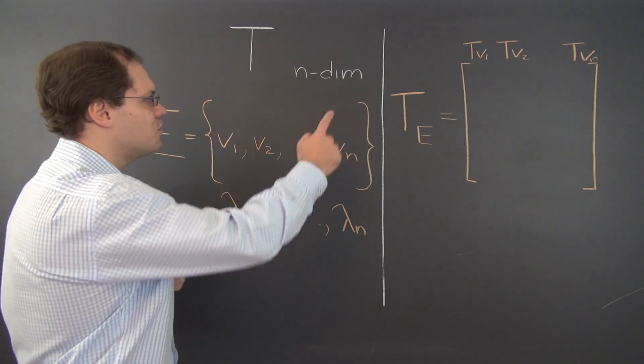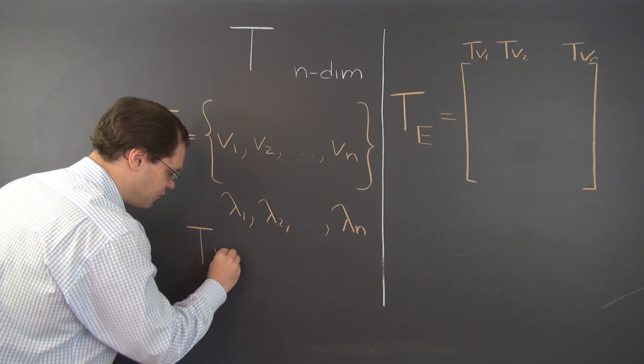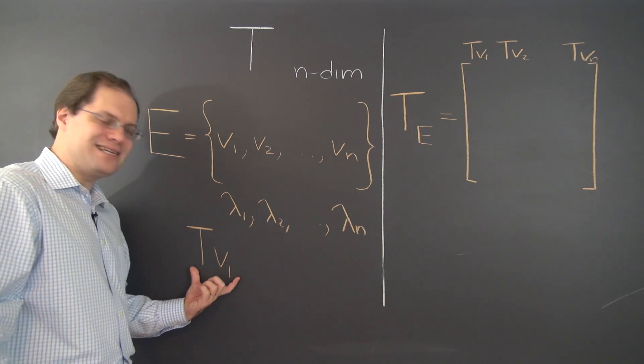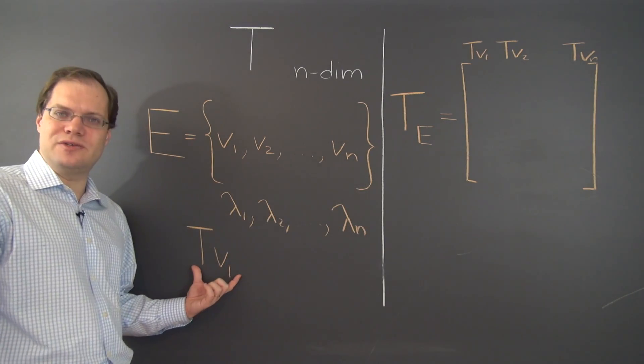All we know is that we have to apply the linear transformation T to V1 and then decompose this vector with respect to the same basis. Now how are we going to do that?